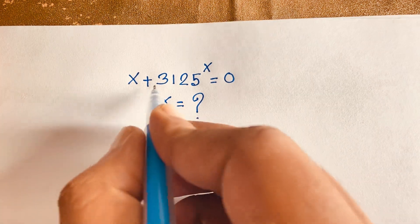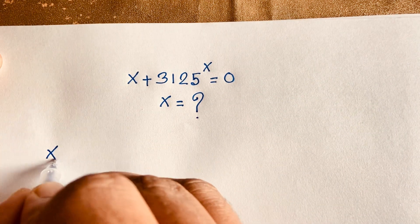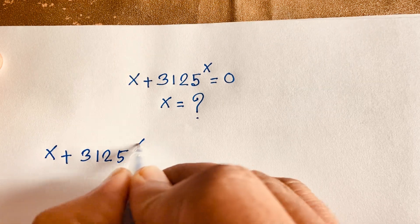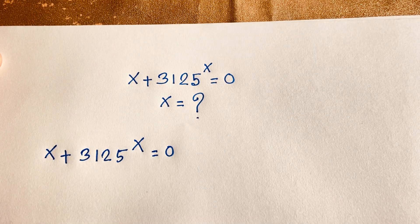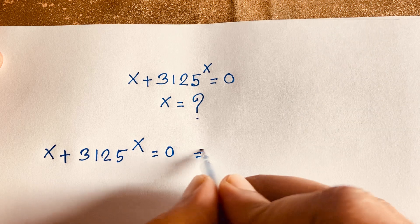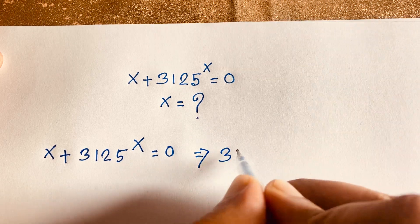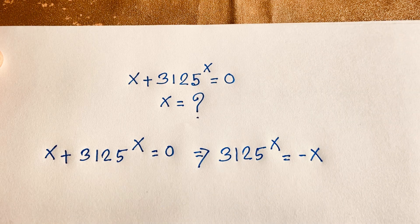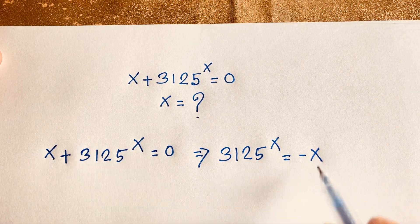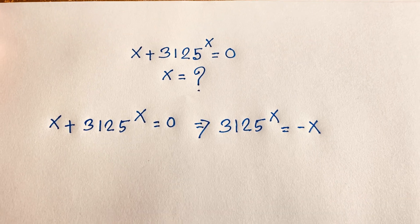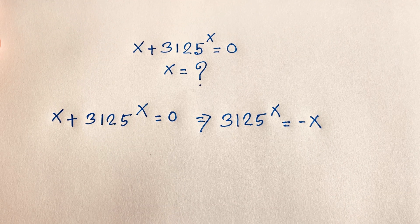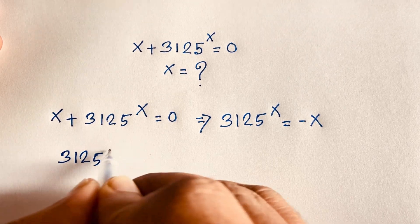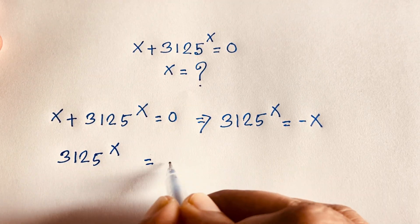Our question here is x plus 3125 to the power x is equal to 0. Moving this x to the other side, we get 3125 to the power x is equal to negative x.